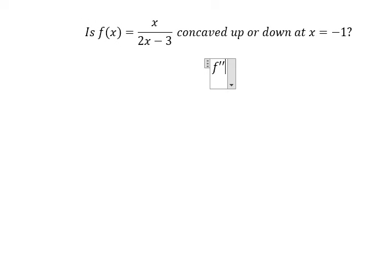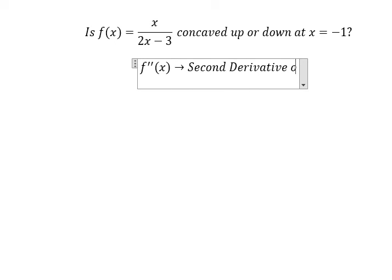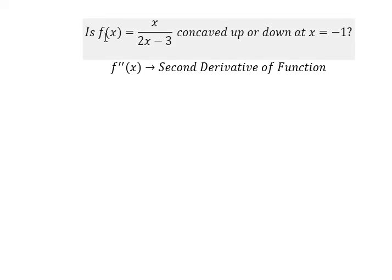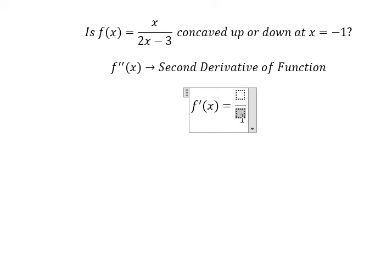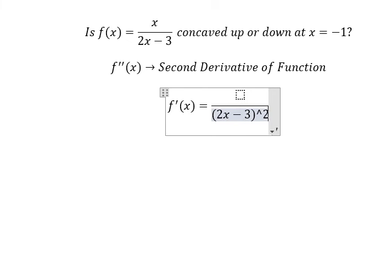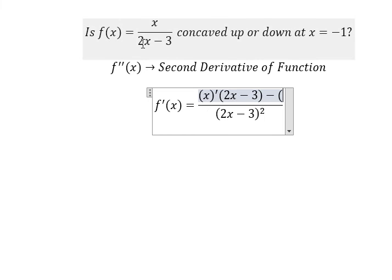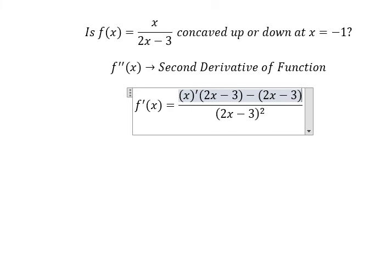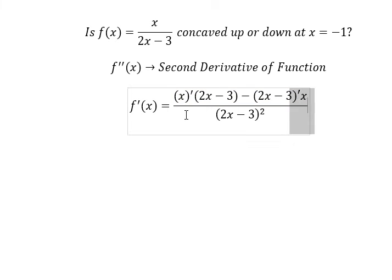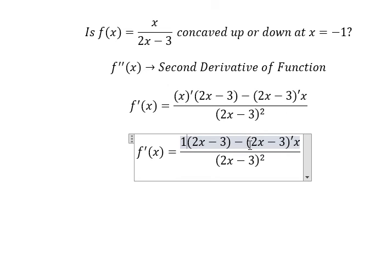We need to find the second derivative of the function. So the first thing we need to find is the first derivative. Using the quotient rule, we take the first derivative of s multiplied by (2s minus 3), minus the first derivative of (2s minus 3) multiplied by s — this one you got about number one, this one you got about number two.